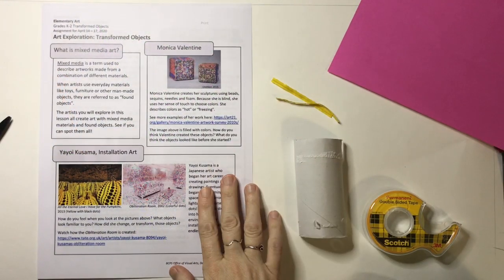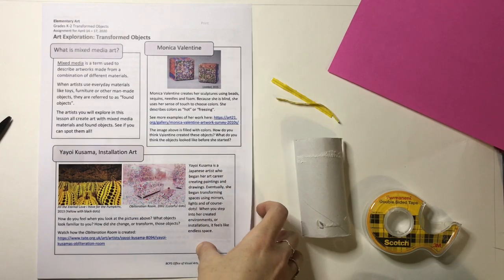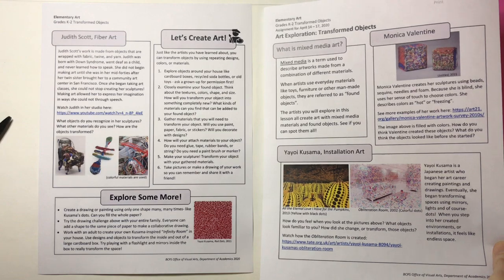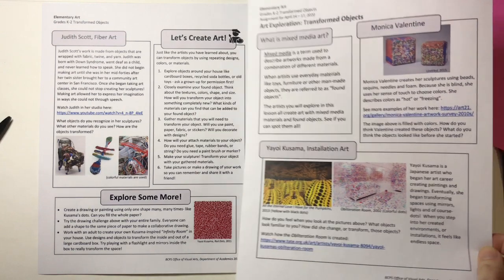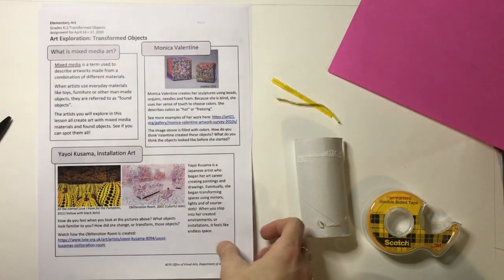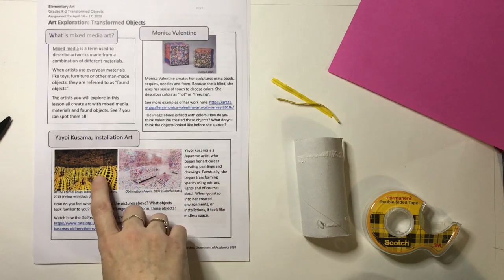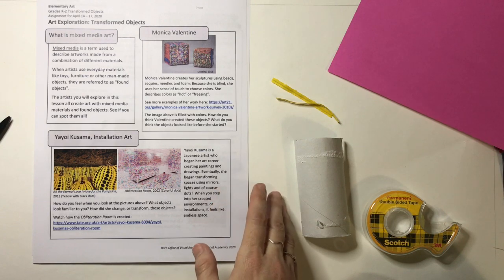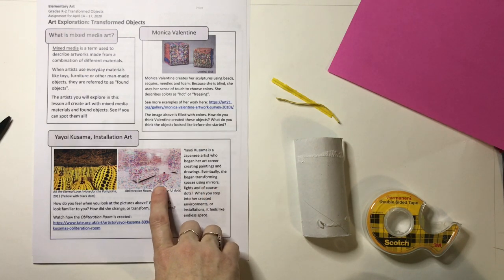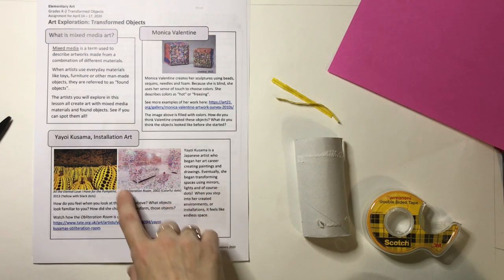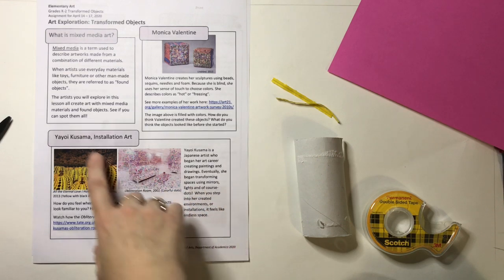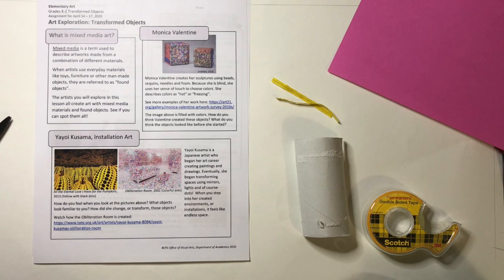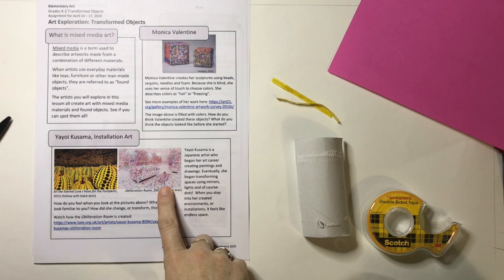So for grades kindergarten, first, and second, this is the printed copy I printed from my computer of lesson two for art this week. What's really cool is that they looked at the artist Yayoi Kusama, who, if you were in the art room — which all of you were — you saw the dot room that kindergarten was creating because we studied this artist, Kusama.